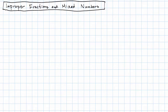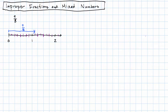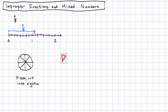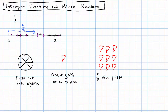In the last video, we saw the fraction 9 eighths, and we actually saw this in two ways. We saw it as a length, and we also saw it as a count, where we started with our pizza cut into eighths. We took out one of those eighths, so here's an eighth of a pizza, and then we made nine copies of that eighth. So, 9 eighths of a unit length, 9 eighths of a pizza.